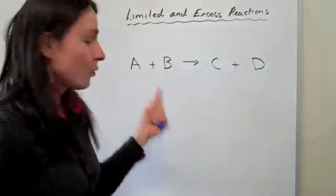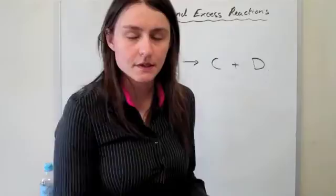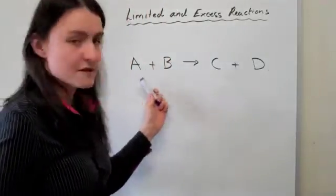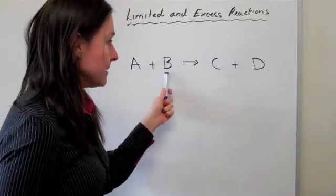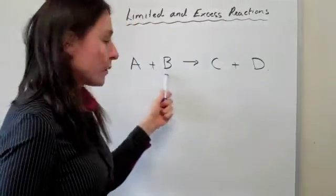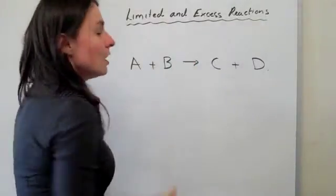Once B runs out, the equation is no longer possible because you require A to interact with B in order to produce C and D. They both have to be there.